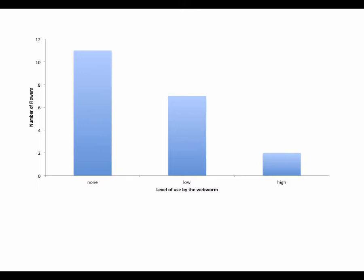What we have here is a frequency histogram which shows the level of use as none, low, and high. Number of flowers is the y-axis. What I want to do is write a legend which explains this to a reader.